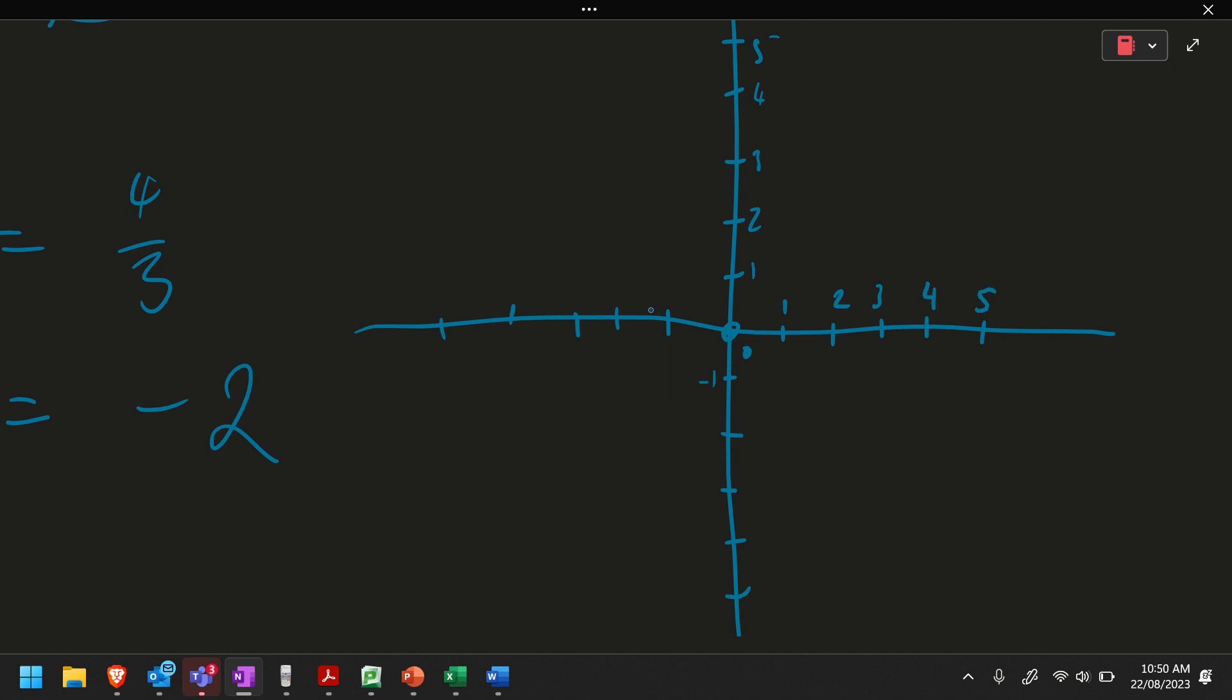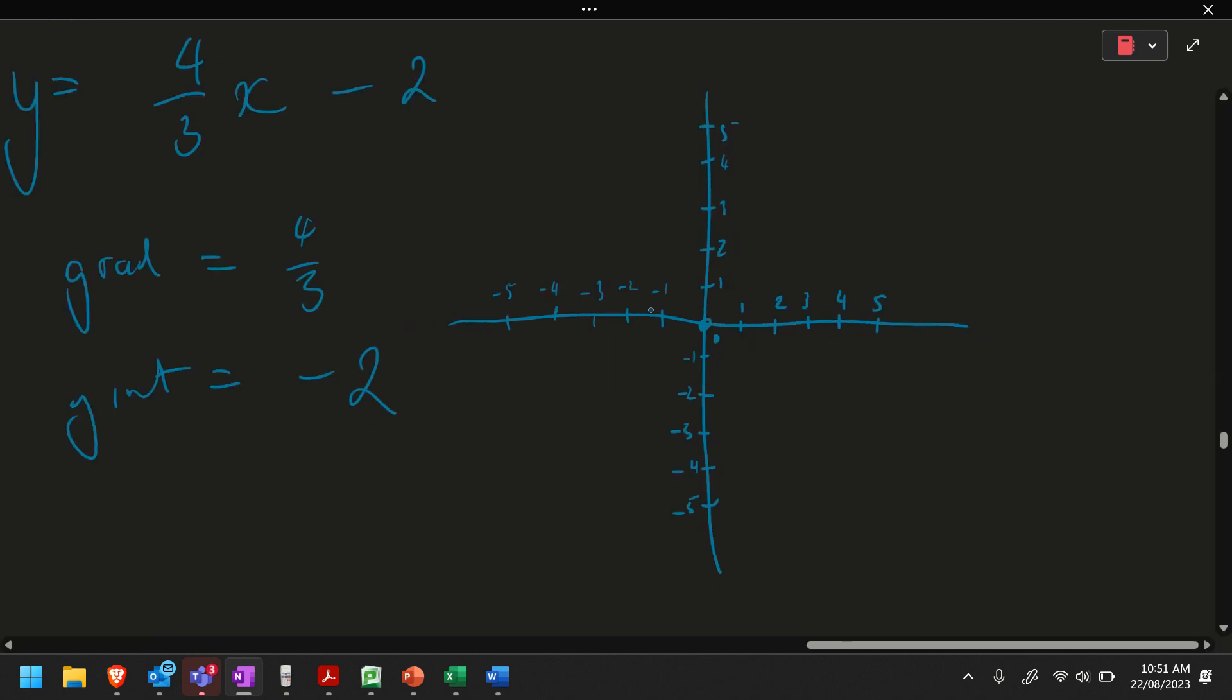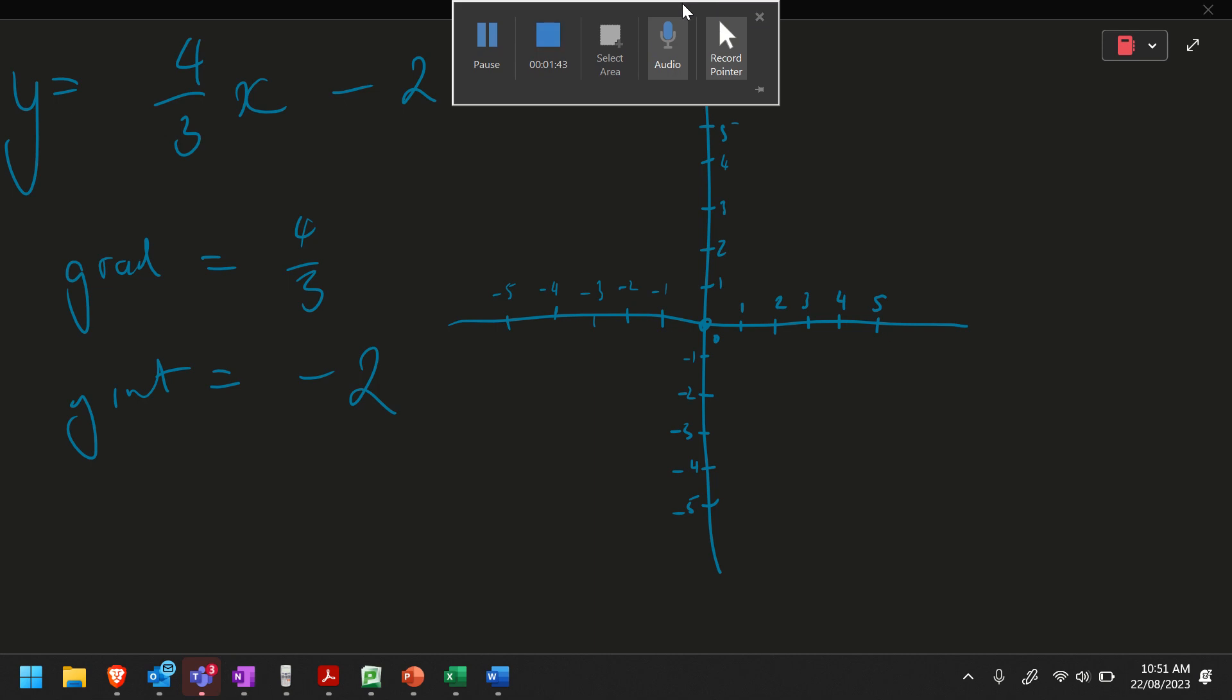This is 1, 2, 3, 4, 5. This is negative 1, negative 2, negative 3, negative 4, negative 5, negative 1, negative 2, negative 3, negative 4, and negative 5. Okay, there is my graph. Just visualize it.